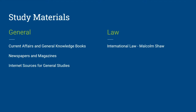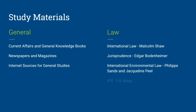For jurisprudence, you can refer to Edgar Bodenheimer. For international environmental law, there is a book by Philip Sands and Jacqueline Peel. For IPR, a book by V.K. Ahuja. These are good books that can greatly help in developing your concepts. You can also refer to S.K. Kapoor for international law and human rights, and S.R. Mainini for international trade law. If you have access to other books, go with them, but make sure they cover your syllabus. If you have well-prepared class notes from your law graduation that cover the SAU syllabus topics, start your preparation with them.